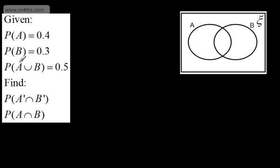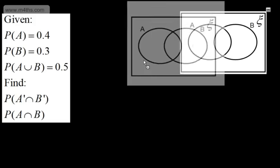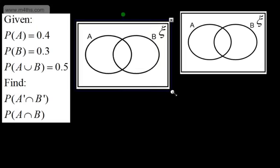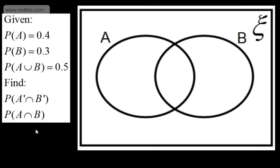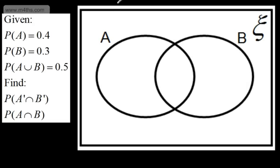In this next problem: given probability of A is 0.4, probability of B is 0.3, and probability of A or B is 0.5, find the probability of not A and not B, and the probability of A intersection B. There are a couple of ways to approach this. We know probability of A union B is 0.5, so everything inside the circles totals 0.5, meaning outside is 0.5.